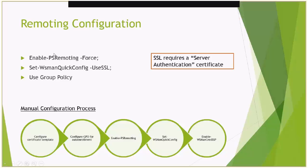If you want to get started in a lab and you're not prepared to deploy this to all your systems, all you have to do is run the Enable-PSRemoting -Force command on one of your servers. That will configure the WinRM service to start listening on port 5985 so you can start making outbound connections to it. If you have a PKI and are interested in using SSL, you can also run the Set-WSManQuickConfig -UseSSL command.